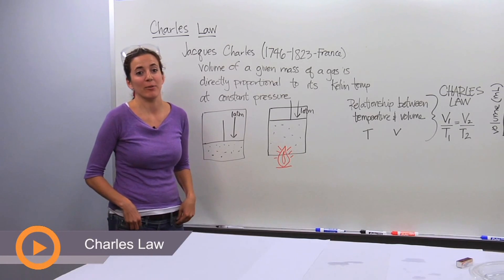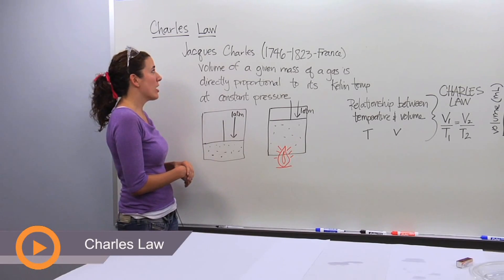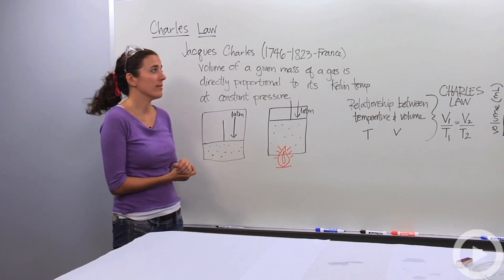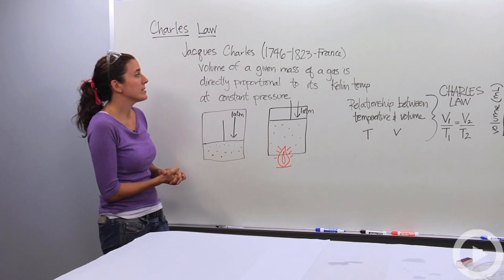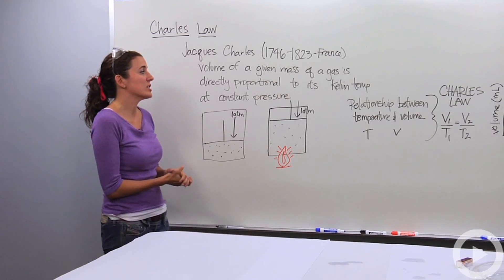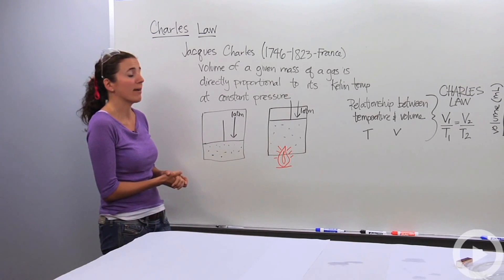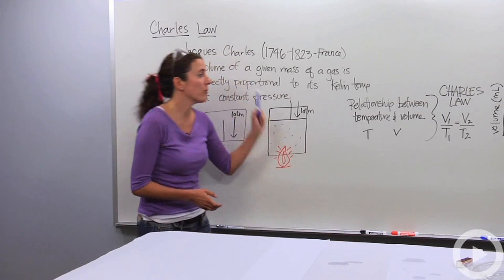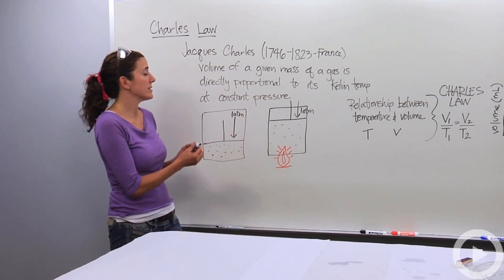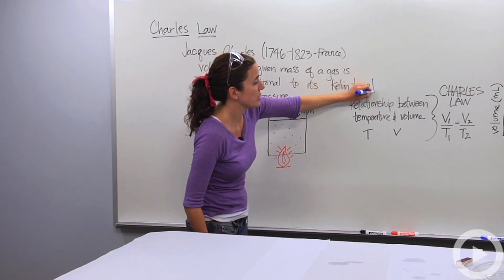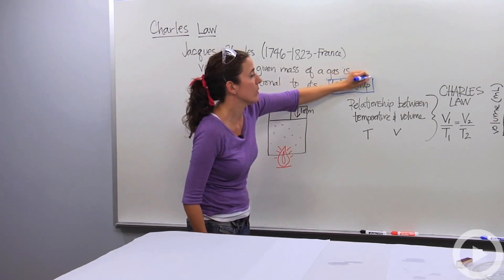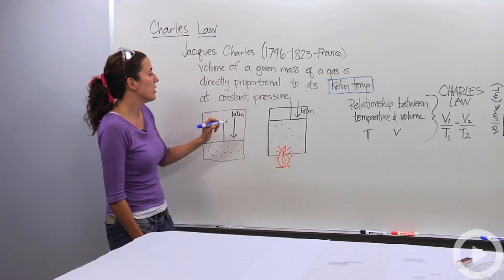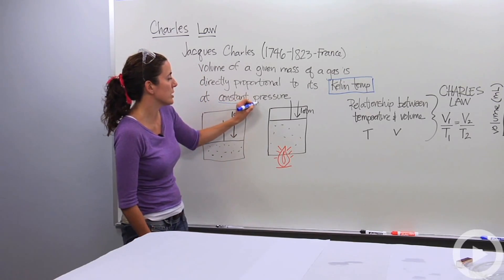One of the gas laws that you might come across is called Charles' Law. Charles' Law was formed by Jacques Charles in France in the 1800s. He discovered that the volume of a given mass of a gas is directly proportional to its Kelvin temperature at constant pressure. Make sure your temperature is always in Kelvin, or else you're going to get the wrong answer. You also want to notice that it's at constant pressure.